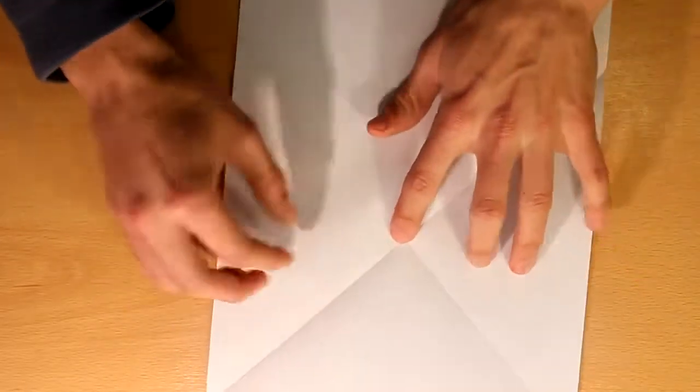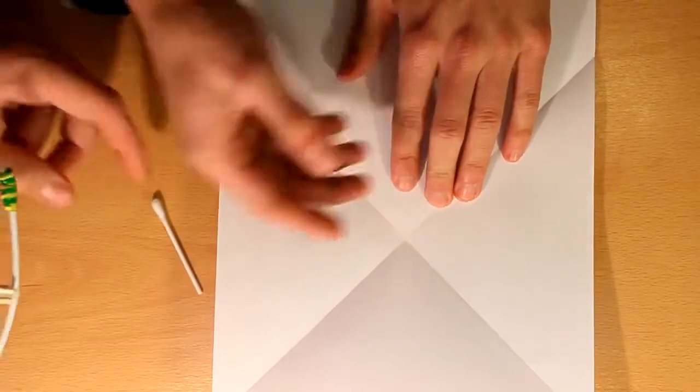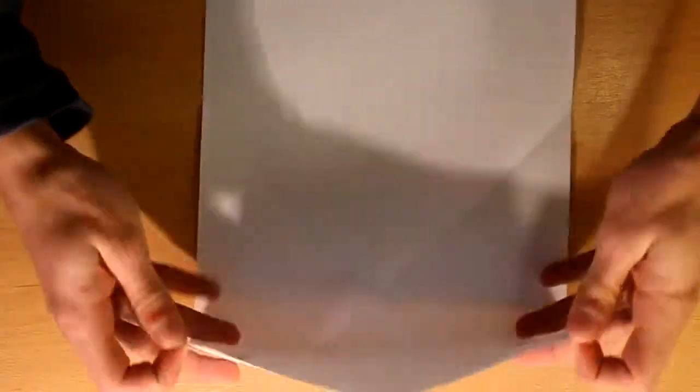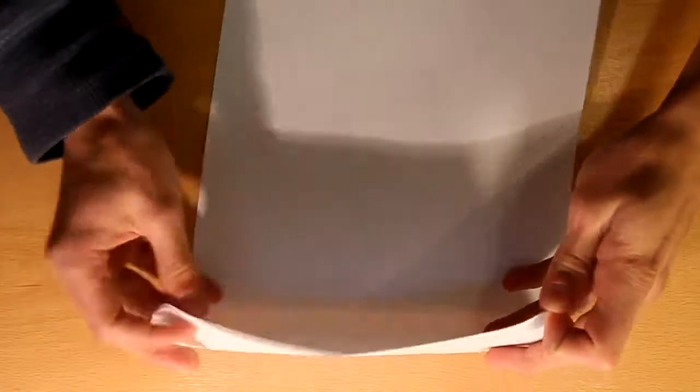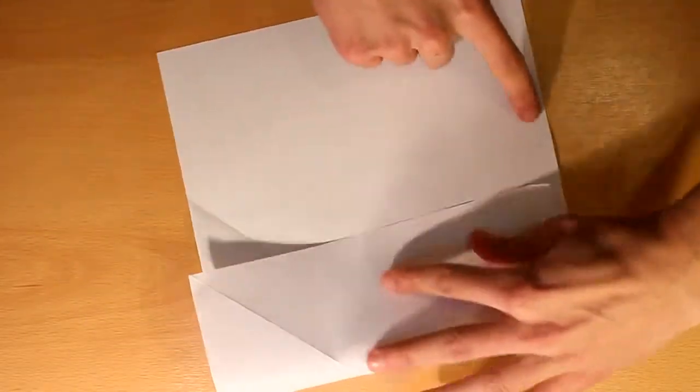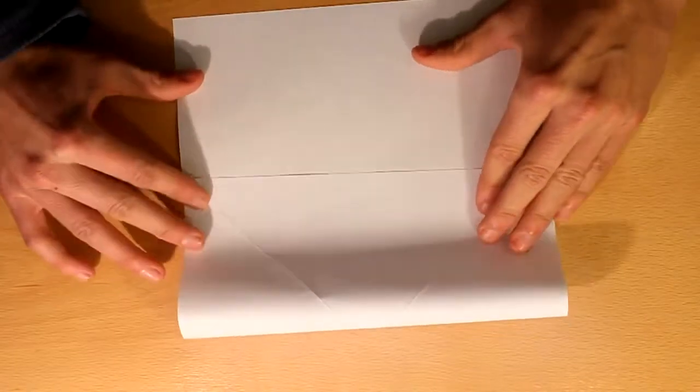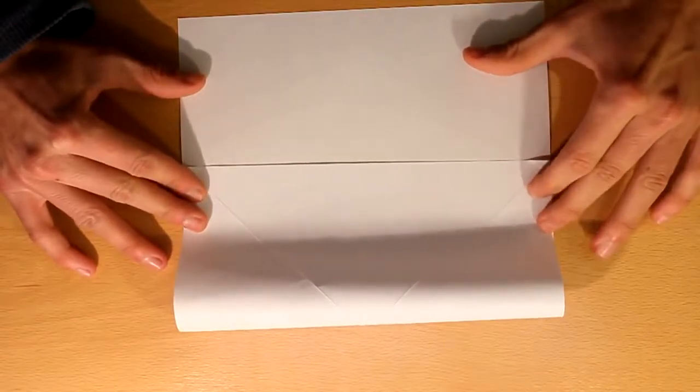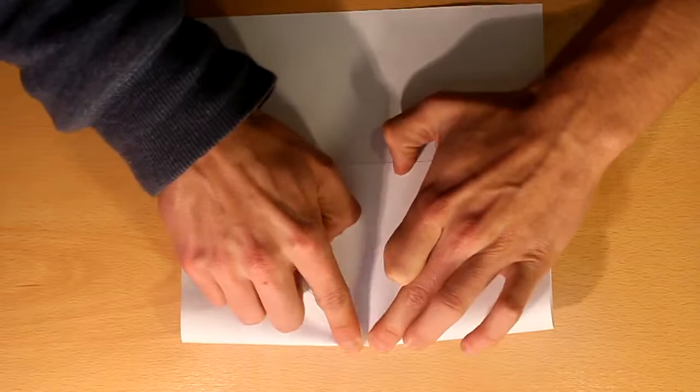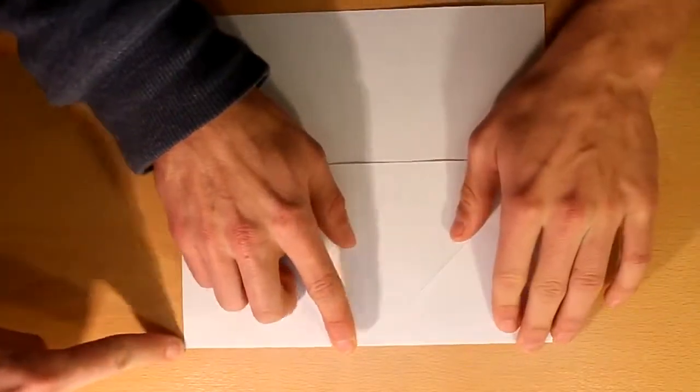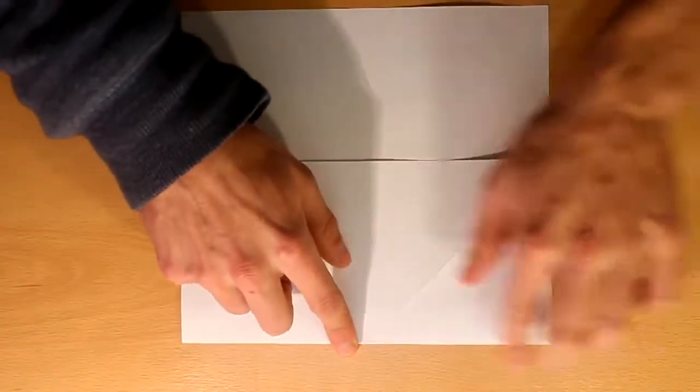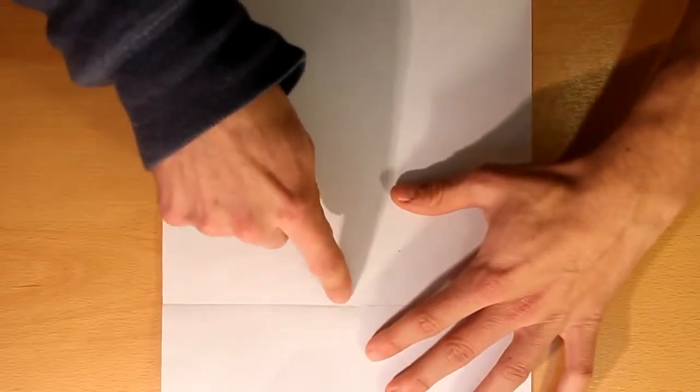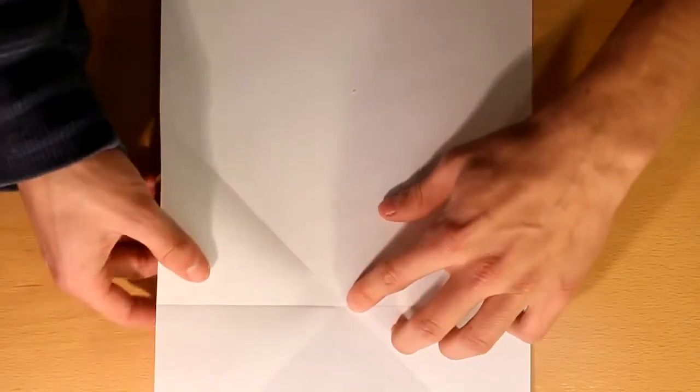Now you have a cross. You're gonna use this point as a reference and fold it like this. You're gonna grab these two parts and pull them until here. And now fold. As always, remember to crease well. This point will be always your reference, the cross. Now fold in half.